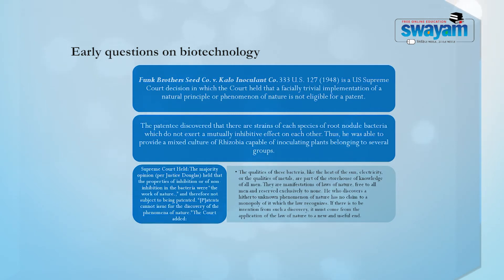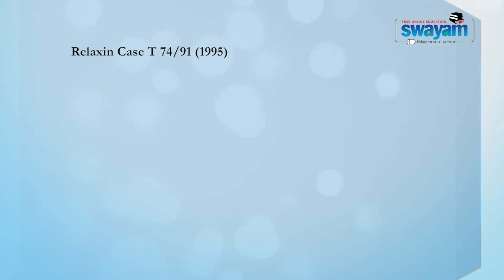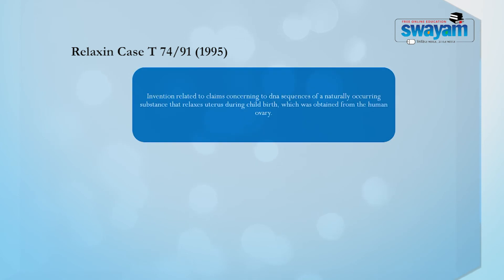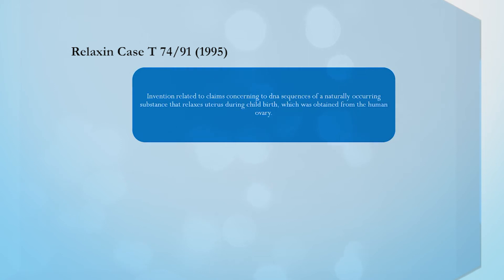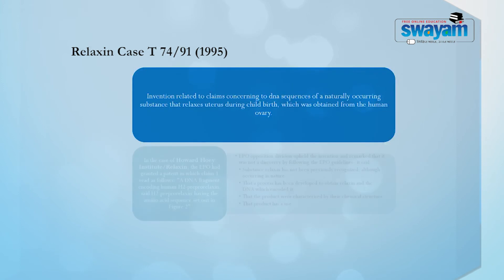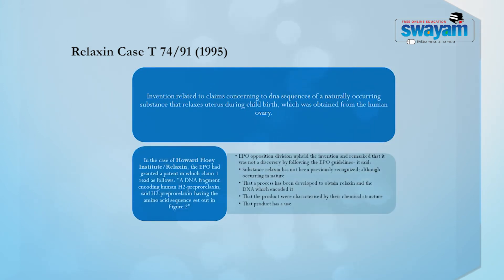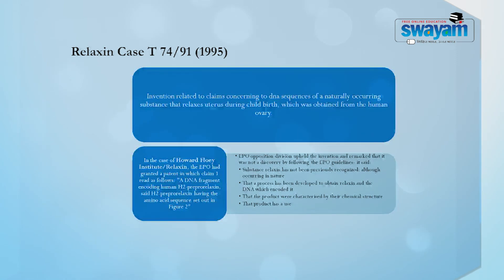Now on the other side of the Atlantic, that is in Europe, Europe had to deal with certain initial challenges. In the Relaxin case in 1995, the invention related to claims concerning DNA sequences of a naturally occurring substance that relaxes the uterus of a pregnant woman during childbirth, which was obtained from human ovary. There were a lot of questions raised in relation to patentability, both in terms of novelty, inventive step, industrial application and also subject matter exclusions.